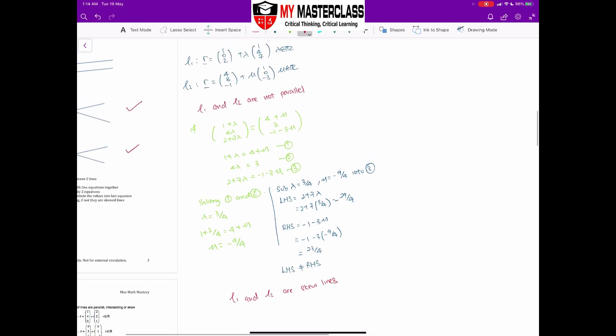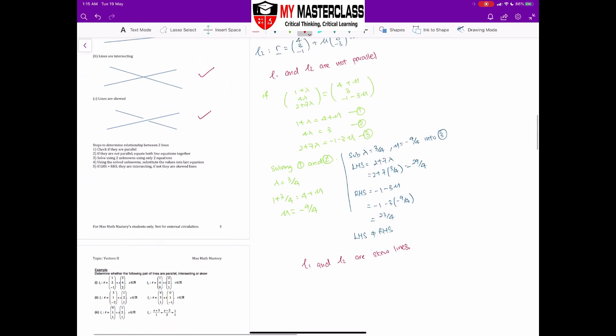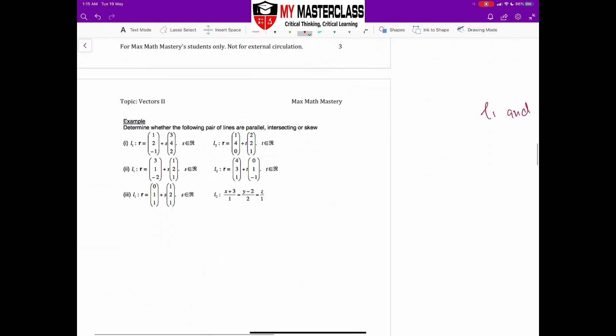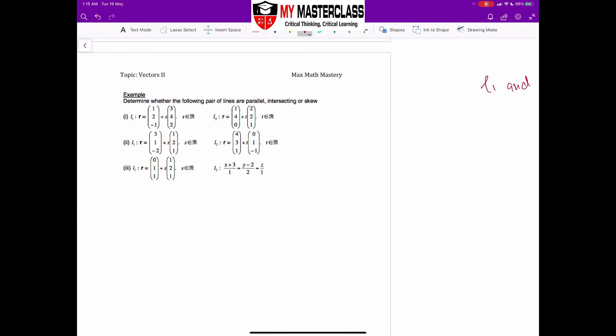If your left-hand side is equal to right-hand side, essentially it means that the lines intersect. And with that value, you can essentially find out the common point of intersection as well. So there are three examples over here in the notes. Kindly go and try doing it. We're going to give you the answer at the end of this video. Determine the relationship between these three lines and we're going to show you the answer.